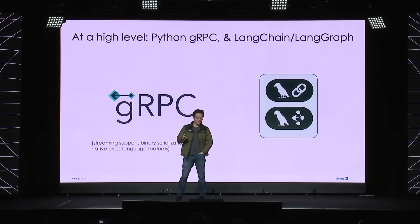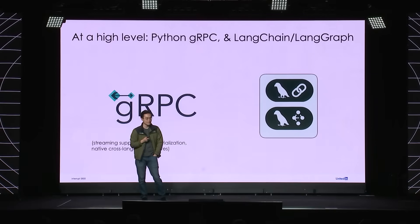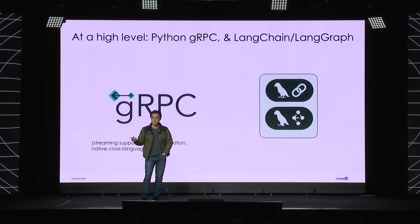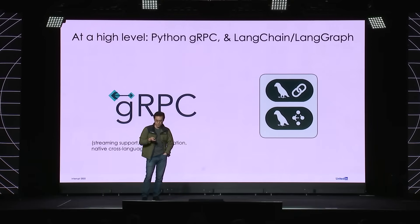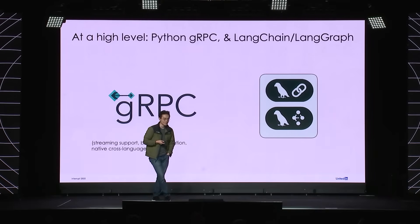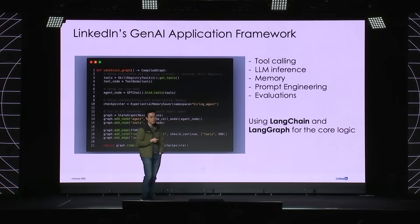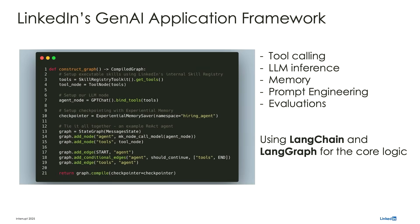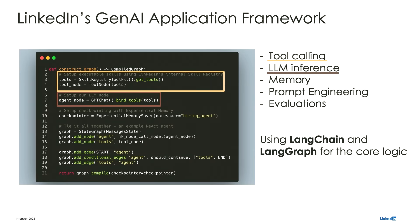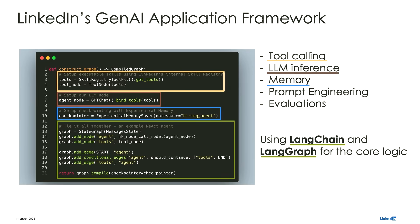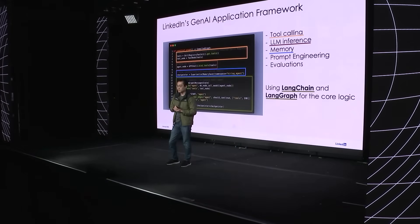Binary serialization is a big performance boost, as well as just the native cross-language features — and if you recall from earlier, we use a ton of languages, so having cross-language support was critical. Here I've built a sample React agent using our application framework. There are standard utilities for tool calling, standard utilities for large language model inference using our internal inferencing stack, standard utilities for conversational memory and checkpointing. And the key thing is that we use LangChain and LangGraph to tie all this stuff together — they form the core of each of our Gen AI apps.